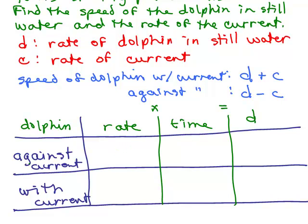The speed of the dolphin with the current is d plus c and against it's d minus c. So against it, we have d minus c, because it slows them down going against the current and with the current it's d plus c.